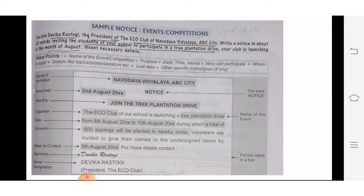Now, notices for events and competitions. You are Devika Rastogi, the president of the Eco Club of Anodaya School. Write a notice inviting the students of your school to participate in a tree plantation drive your club is launching in the month of August.